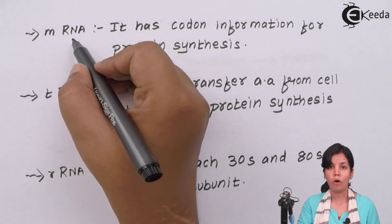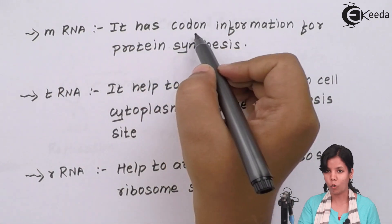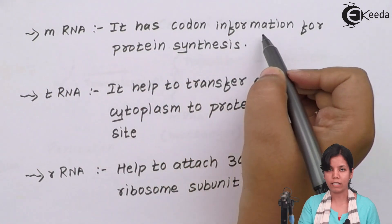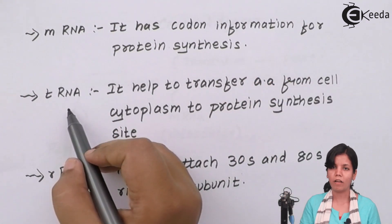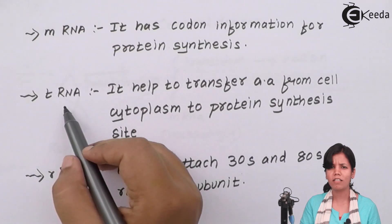The function of mRNA is it has codons or you can say information for protein synthesis in it. All the proteins, the 20 different types of proteins synthesized in one body, the information is available on mRNA. The next form of RNA is tRNA or you can say transfer RNA.